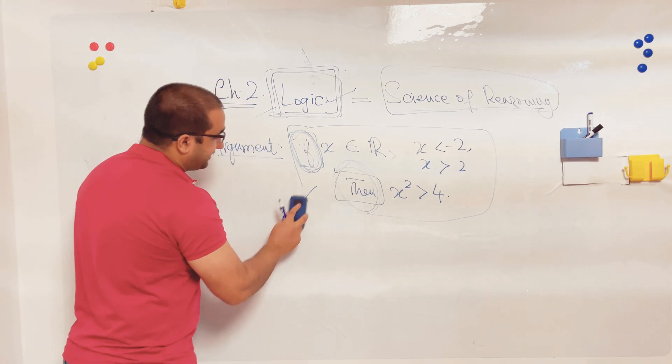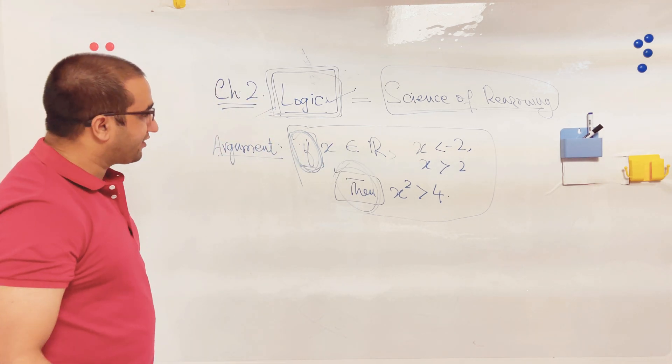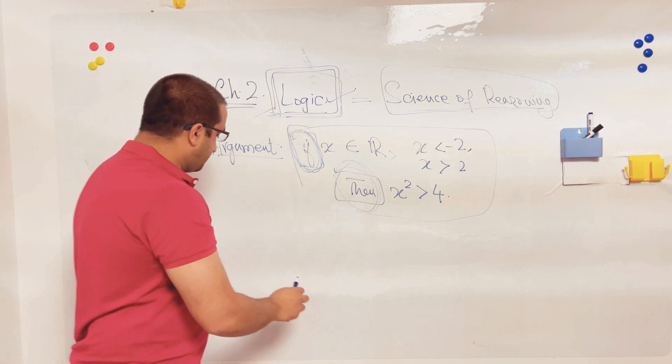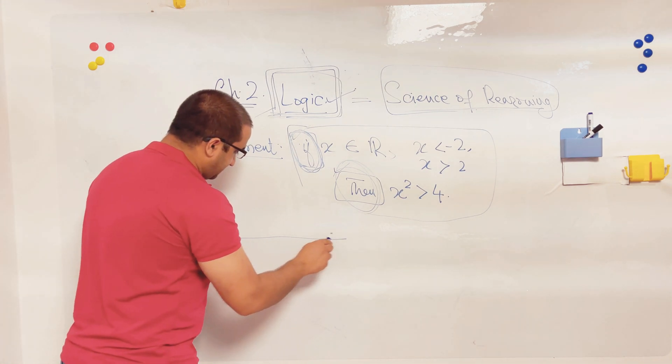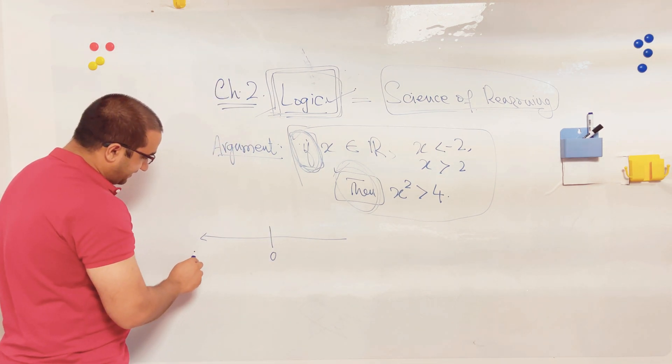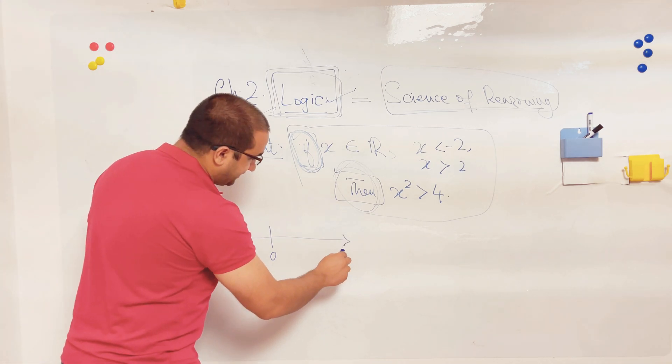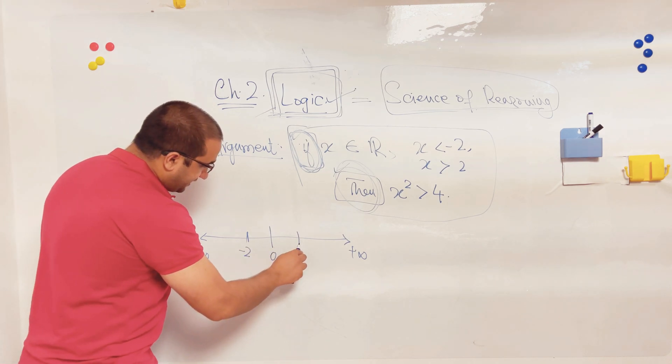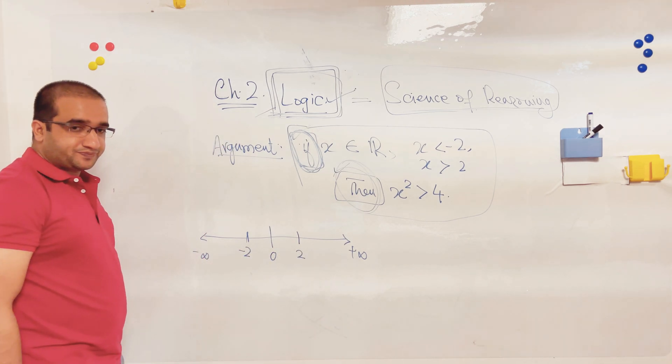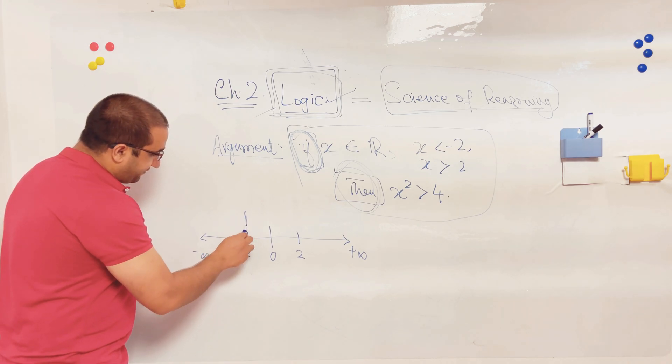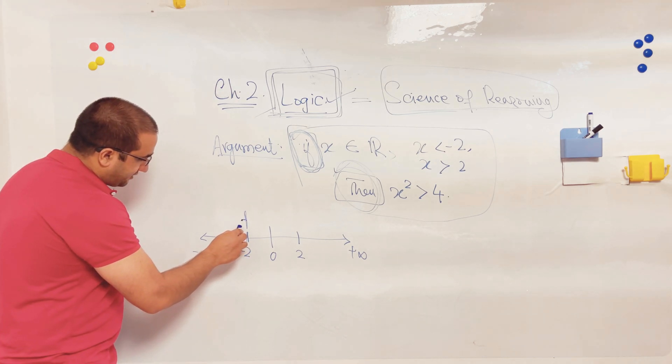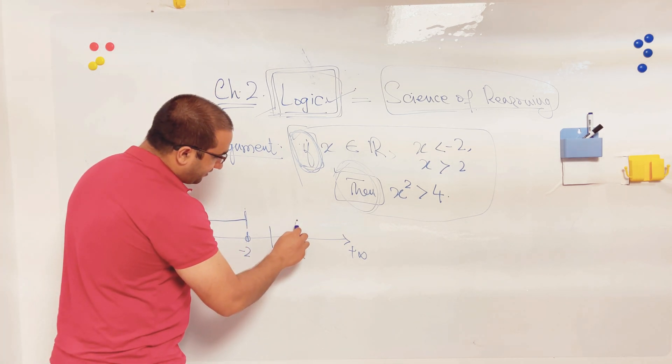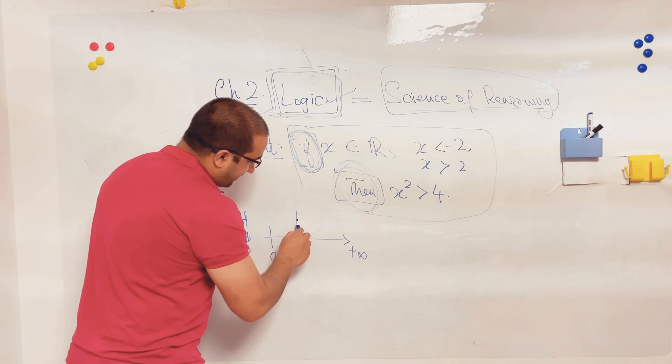The question is, the argument is: I want to say that if x is either... if this is the real line, this is negative infinity, this is positive infinity, here it is minus 2, here it is positive 2. I am claiming that if the value of x is on the left from this region, from this point, or the value of x is on the right from this point...